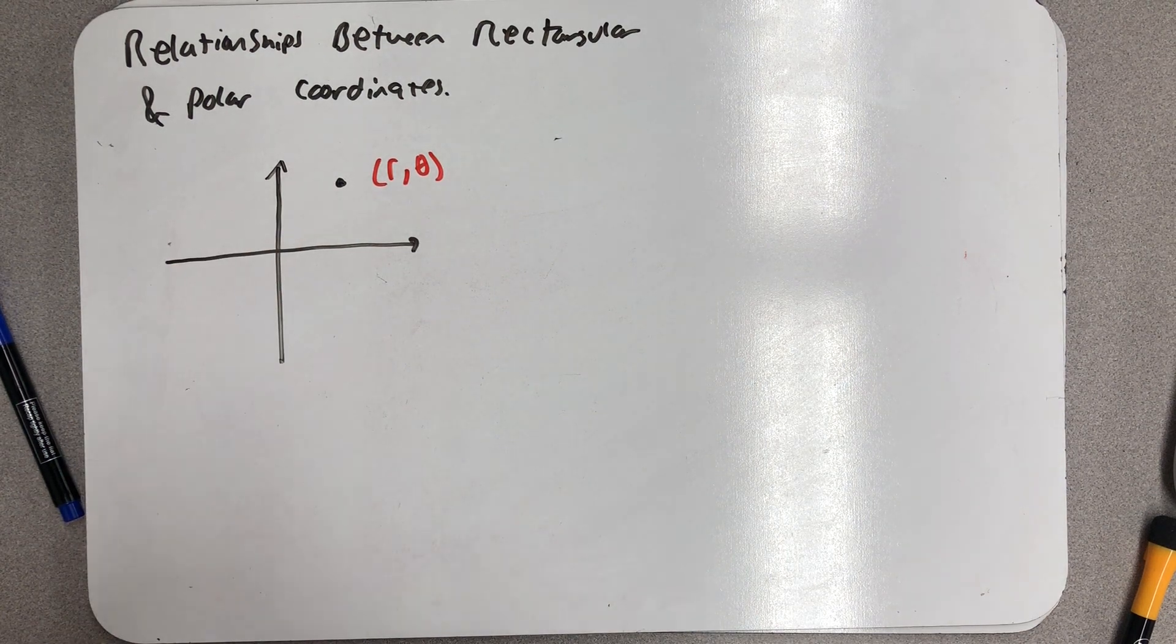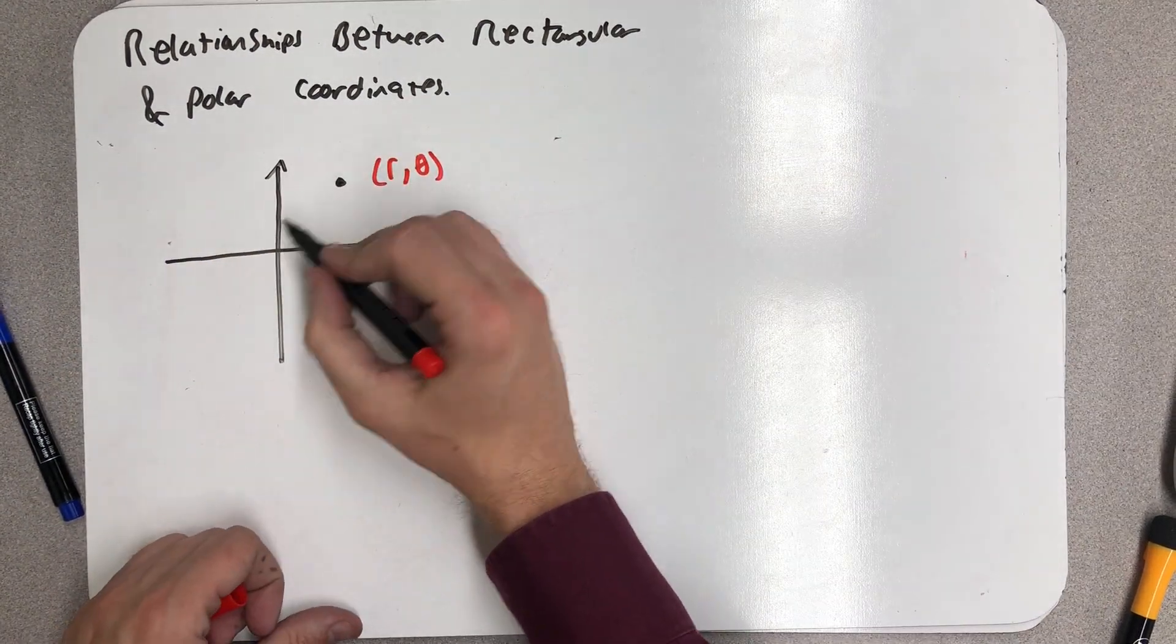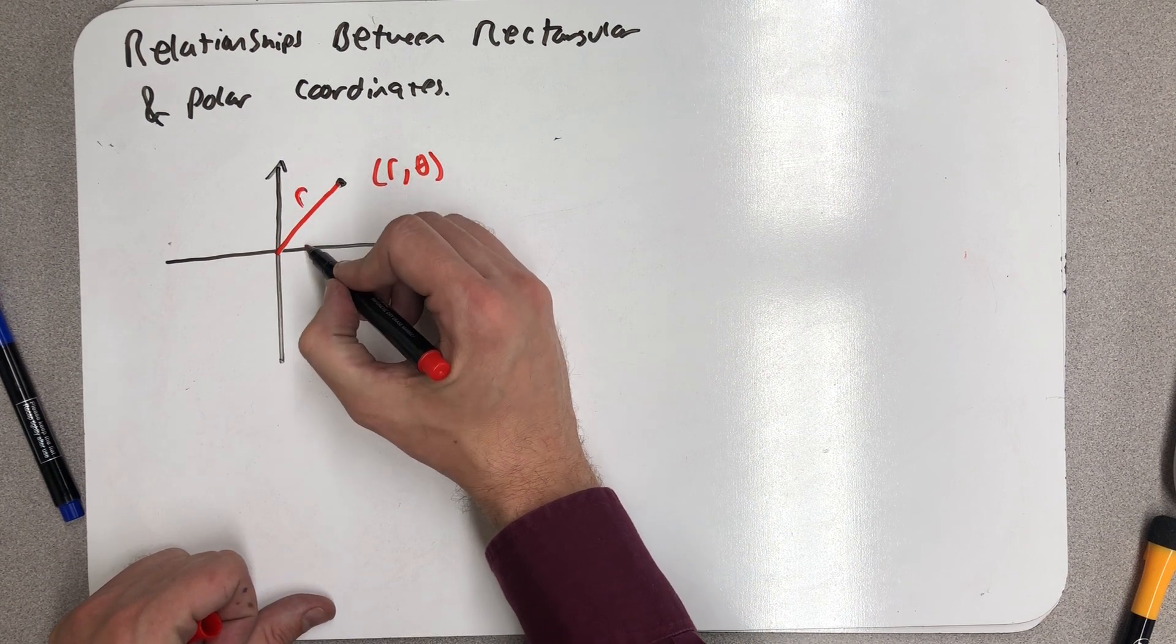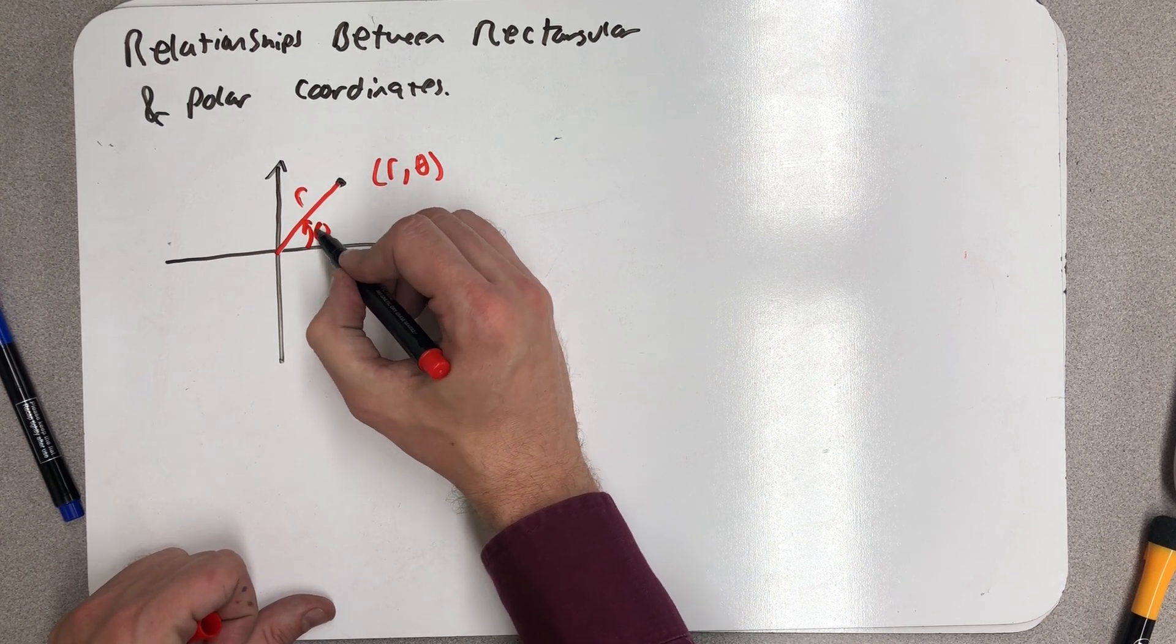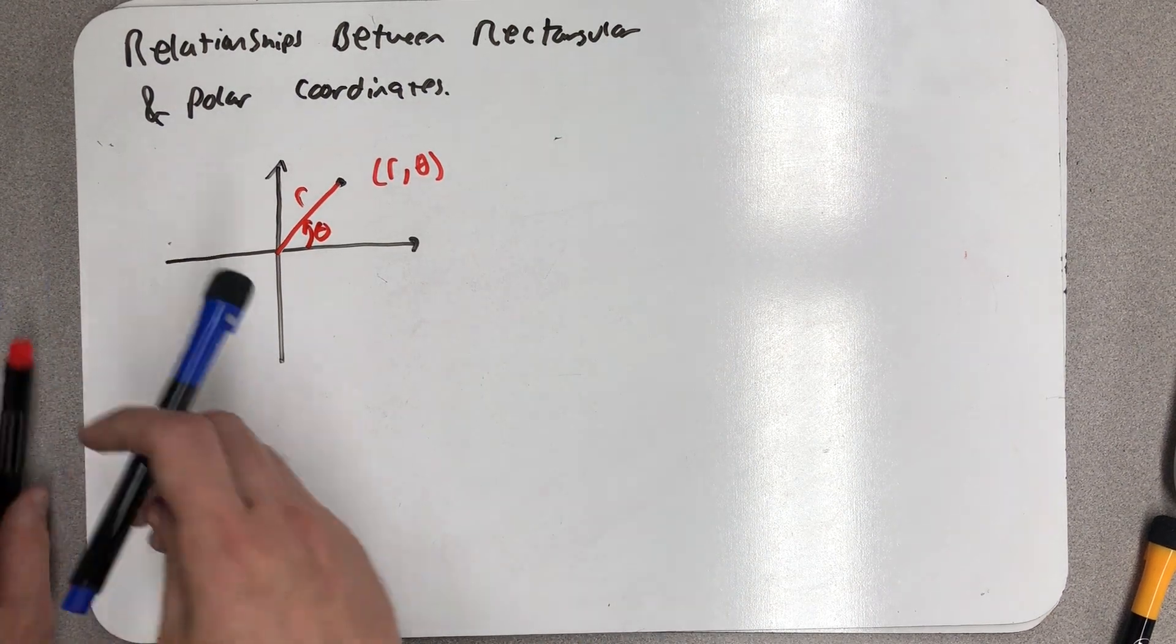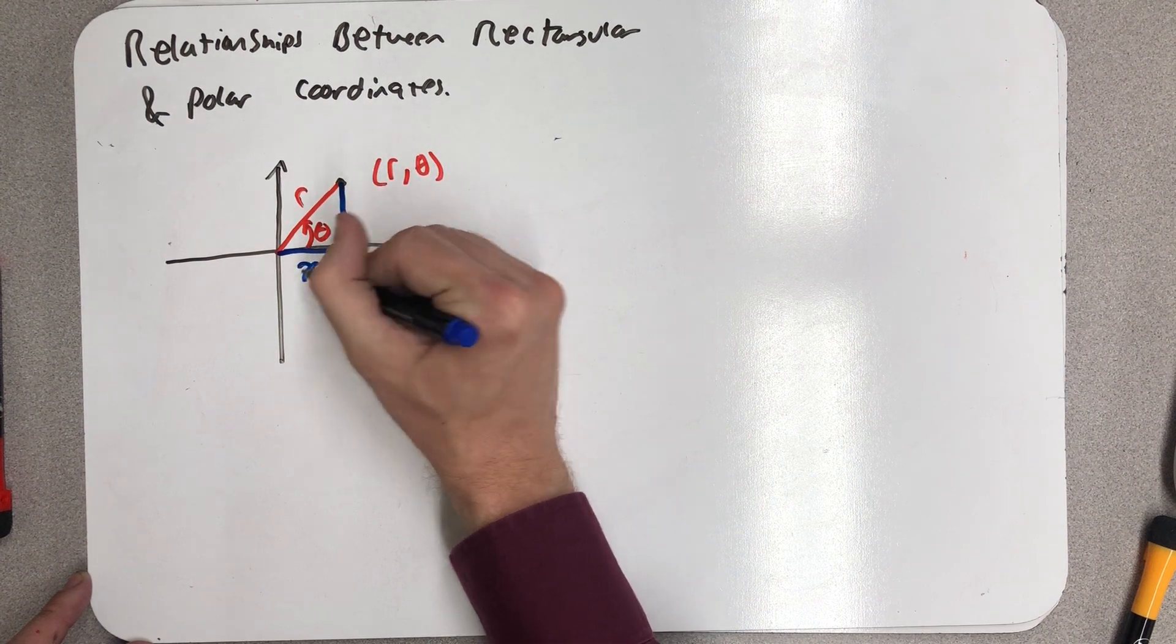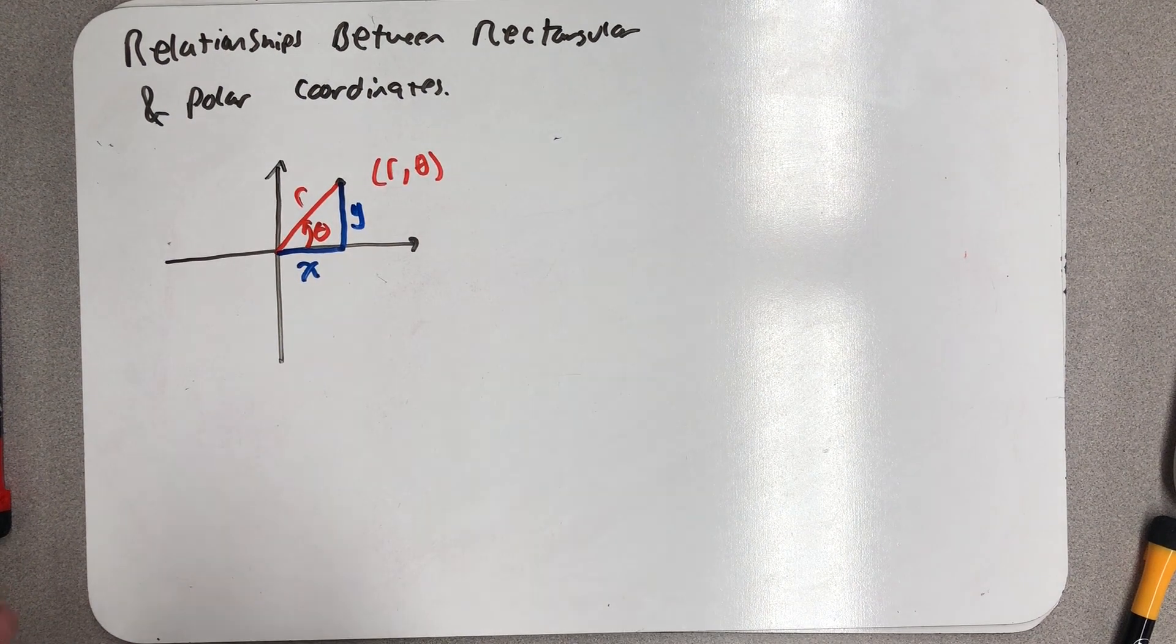Imagine I have a point here that in polar coordinates is (r, θ). I know this distance from the pole is r, and the angle rotated from the polar axis is θ. That point would also have an x-coordinate and a y-coordinate in rectangular coordinates, a horizontal distance and a vertical distance.